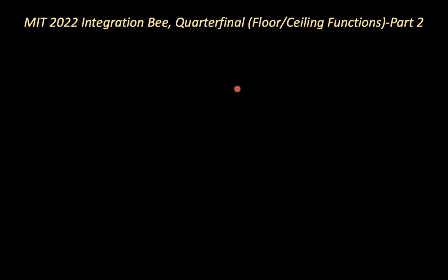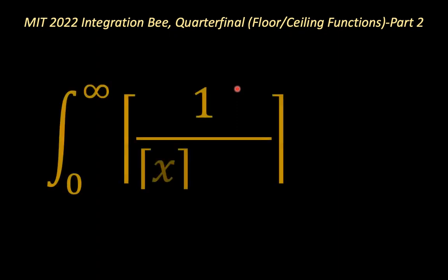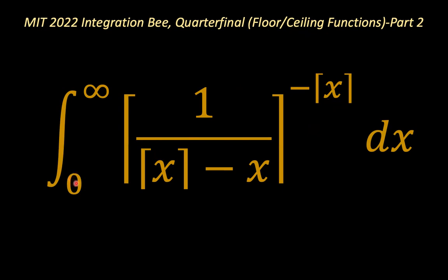Today's problem is really intricate, even from just the visuals. The problem is the integral of the ceiling function of one over the ceiling function of x, minus x to the power of negative ceiling function of x, from x equals zero to x equals infinity.